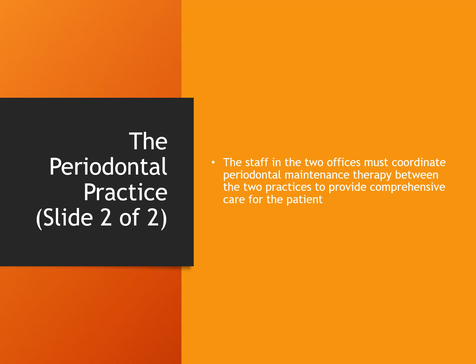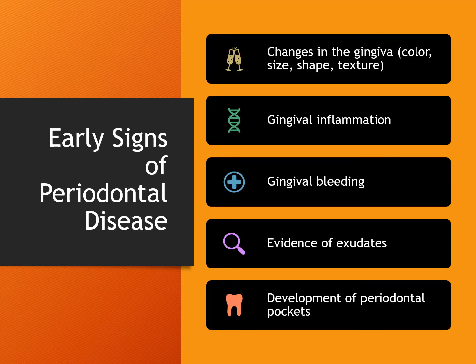Maintenance appointments are critical. There are early warning signs of periodontal disease. These include changes in color, size, shape, and texture of the gingiva, inflammation, bleeding, evidence of pus, and the development of periodontal pockets. Bacteria in the periodontal pockets will multiply, and if left untreated, the disease will progress until the tooth is ultimately lost to periodontal disease.